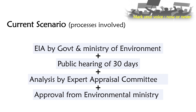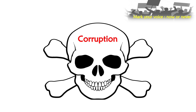Now let's look at the current scenario of how an industry is started. First, the government and Ministry of Environment conduct an Environment Impact Assessment. After that, a public hearing of 30 days is kept open for people of that locality to voice their concerns. An expert appraisal committee then analyzes the case thoroughly and takes measures for approving, rejecting, or suggesting changes. After approval, the project is forwarded to the Environmental Ministry for final approval. In reality, every step is handled improperly, with corruption coming in as a villain.